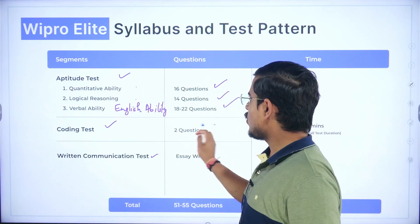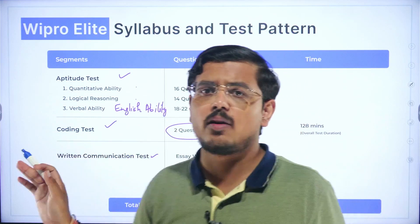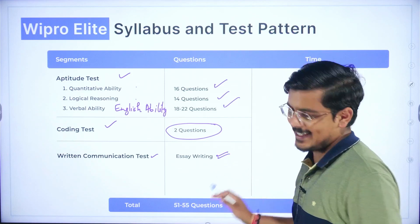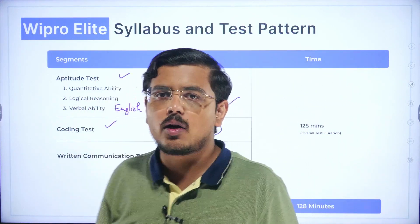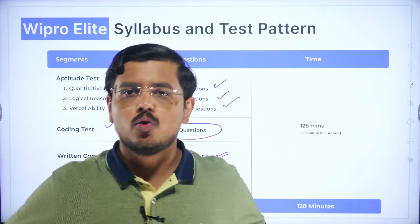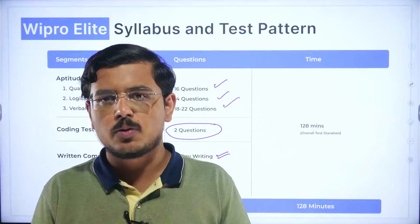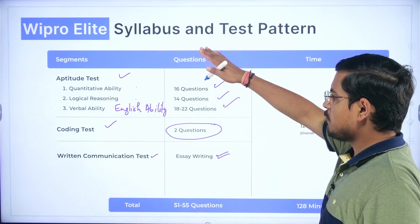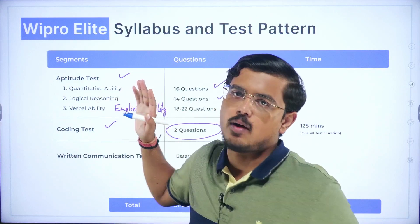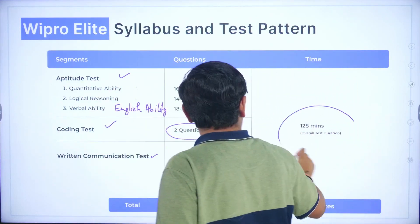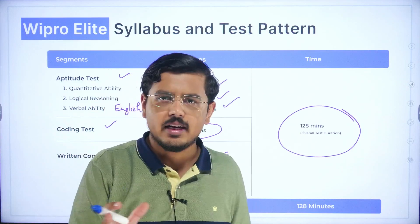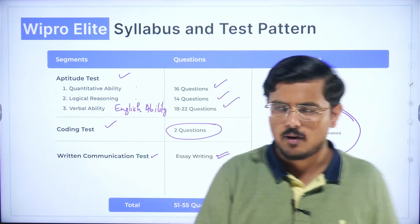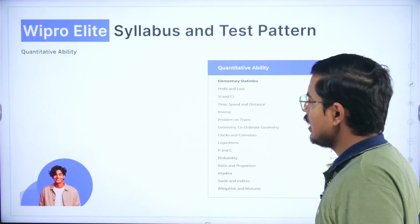You have 16 questions in quantitative ability, logical reasoning has 14 questions, 18 to 22 questions of verbal ability. Then you move to the coding section where you're going to have two questions. Then you'll have written communication test where you will be supposed to write an essay. Once you clear it out you will be going ahead for a speaking round or voice communication round. The total duration of the test is somewhere around 128 minutes, generally two hours two and a half hours.